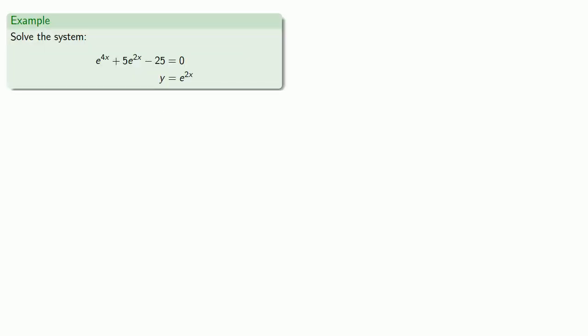For example, we solved this system of equations earlier, and we solved it by noting that if e to the 2x is y, then e to the 4x is e to the 2x squared, that's y squared. And so we replaced and got a quadratic equation, which we solved.